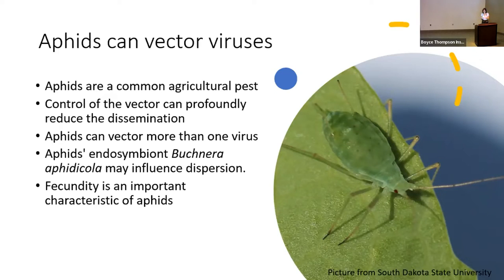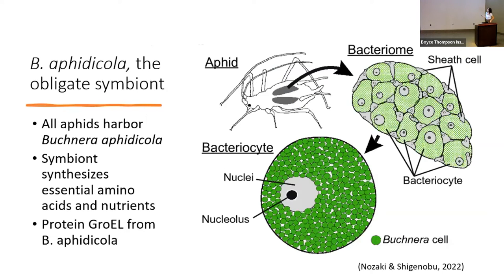Aphids also harbor an endosymbiont called Buchnera aphidicola, which is very important for influencing their dispersion and fecundity — essentially, the fertility of an aphid — and their ability to reproduce is also important when we think about their dissemination. Buchnera aphidicola is an obligate endosymbiont, meaning it must coexist with the aphid. The aphid relies on it for synthesizing essential amino acids and nutrients. It resides in a specialized organelle called a bacteriome, composed of bacteriocytes, with hundreds of Buchnera cells inside each bacteriocyte.